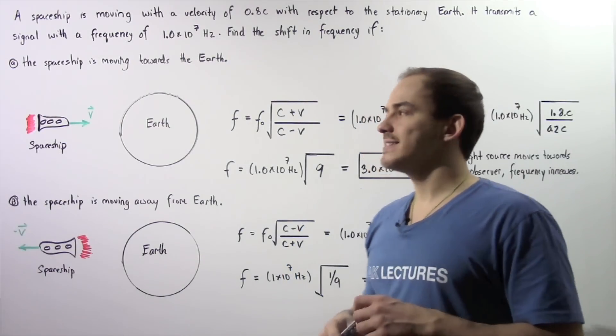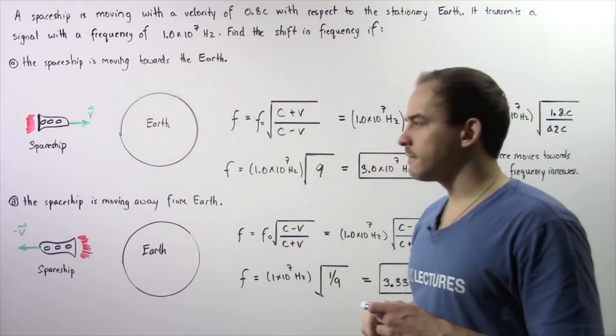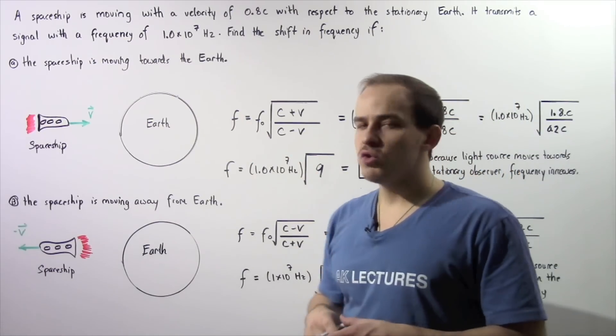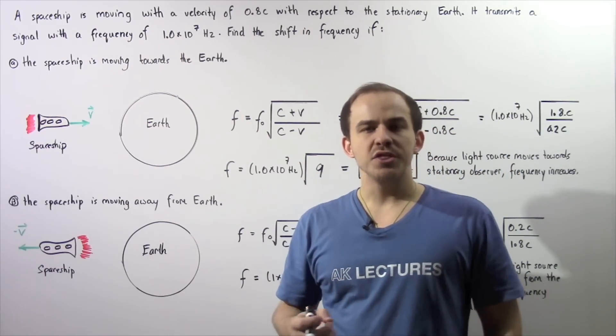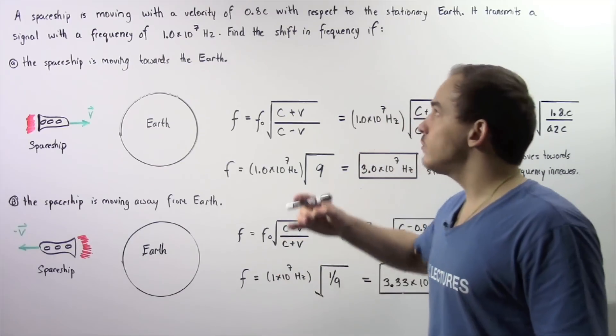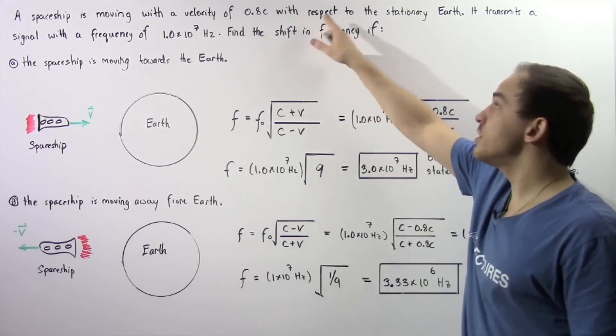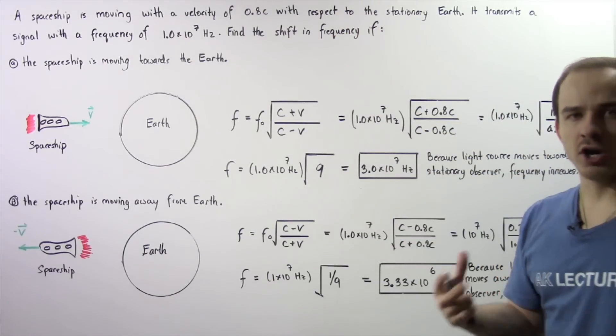Let's examine the following example that deals with the Doppler effect for electromagnetic radiation. Suppose a spaceship is moving with a velocity equal to 80% of the speed of light in a vacuum with respect to the stationary Earth.